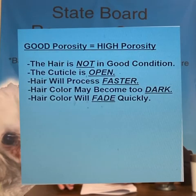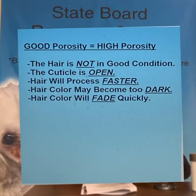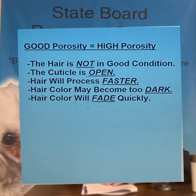Moving right along to good, or what the state calls high porosity. The hair is not in good condition. Good or high porosity means your hair is not in good condition. The cuticle is open, usually from chemicals, curling irons, flat irons, blow dryers, things of that nature. Because the cuticle is open, it's easy for moisture and chemicals to get into the cortex of your hair, so processing will occur quickly. In terms of hair coloring, it often becomes too dark and sometimes even gets a green ashy look to it.